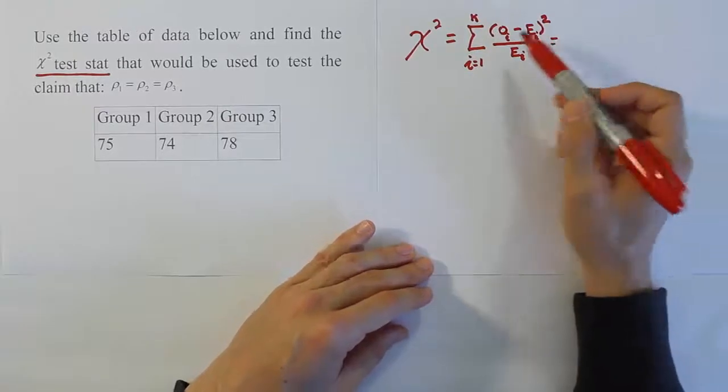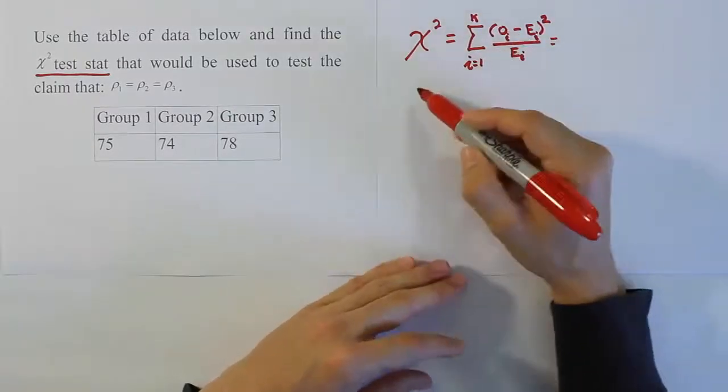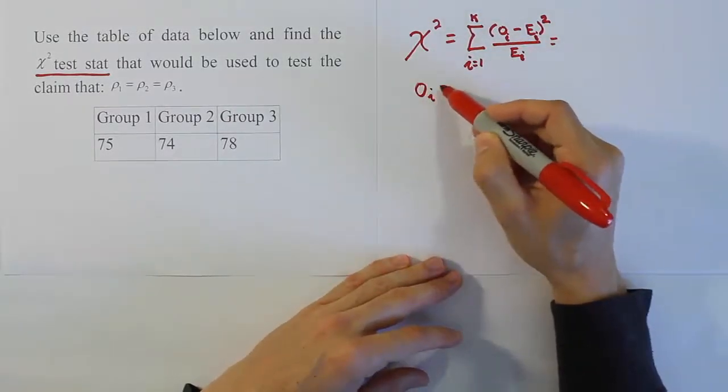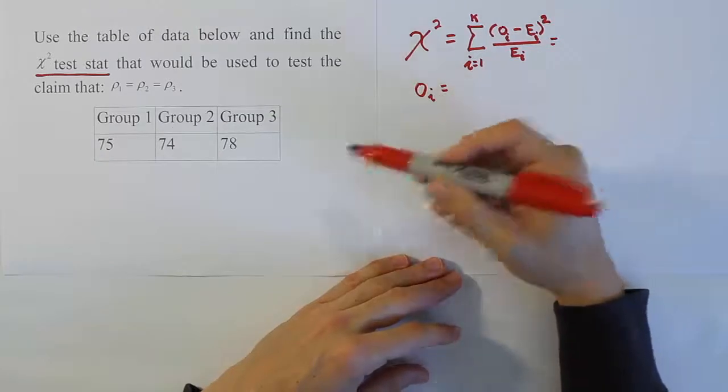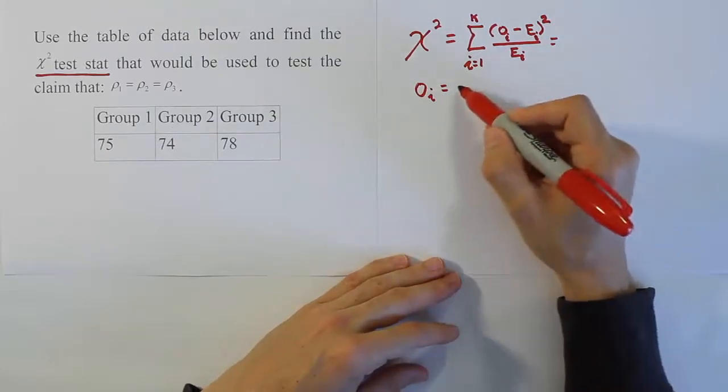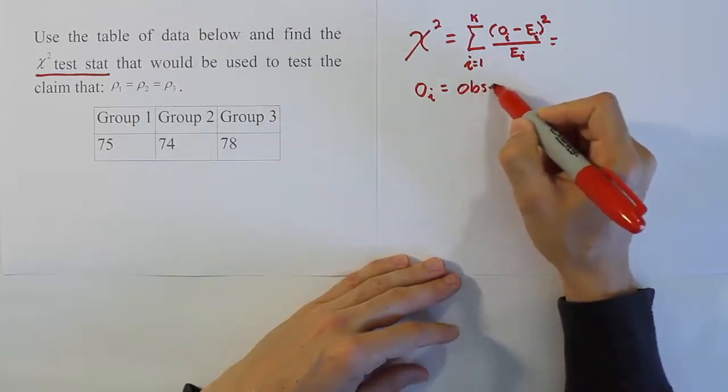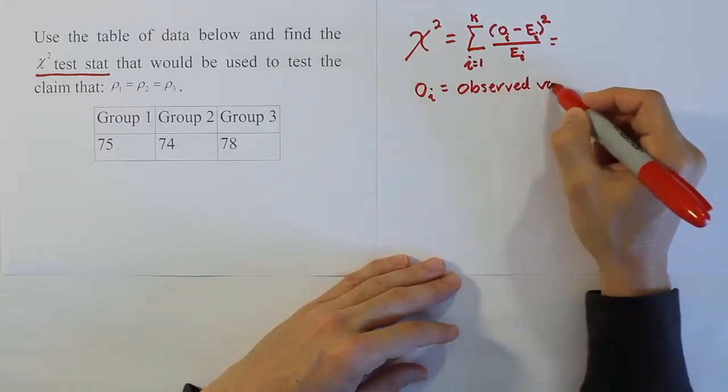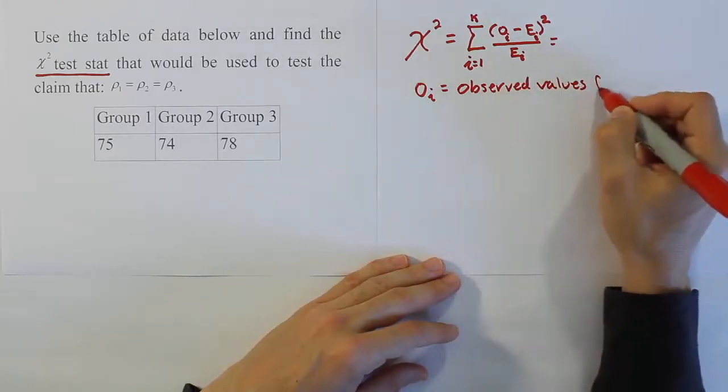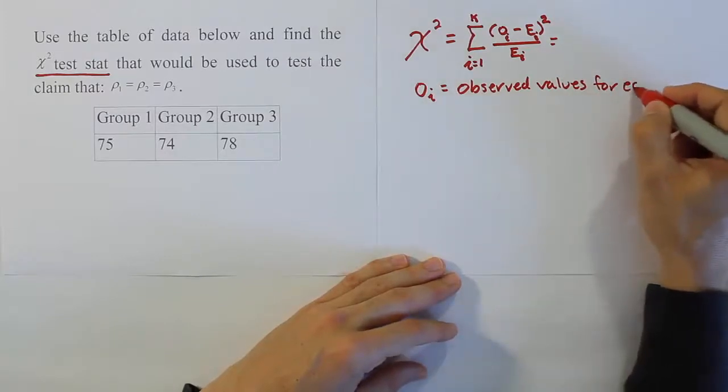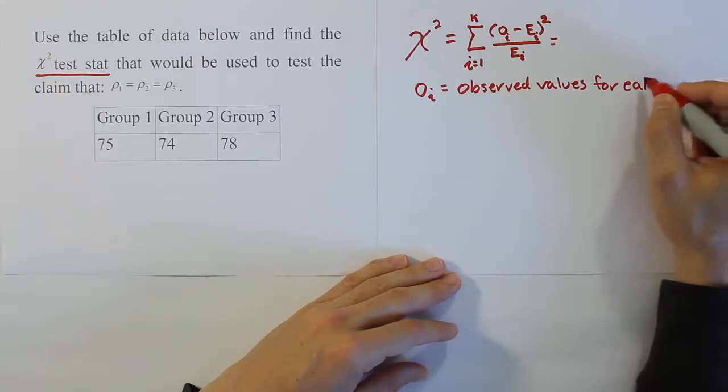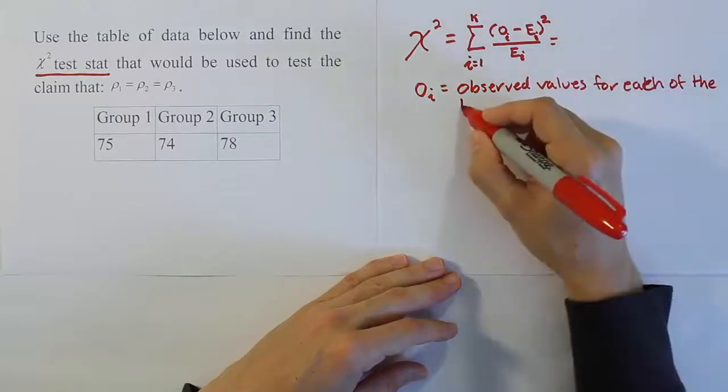Let's explain what it means. The observed values are basically the values that you see in the problem that are given to you in the tables. So these are going to be the observed values for each of the k categories.